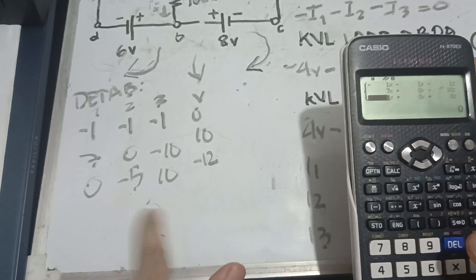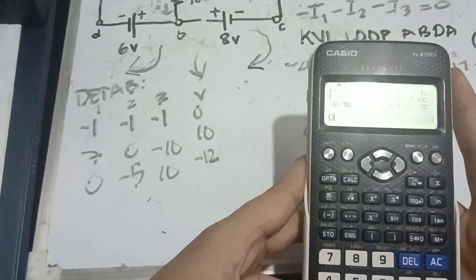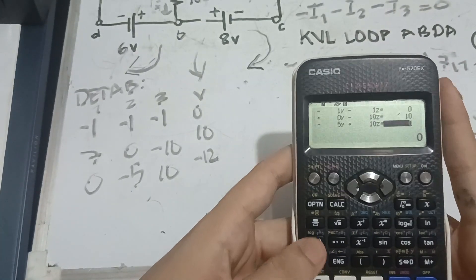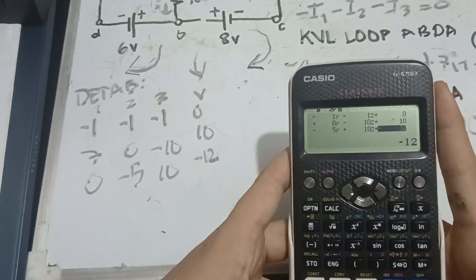Third row. 0, negative 5, 10, and negative 12. 0, negative 5, 10, and negative 12.